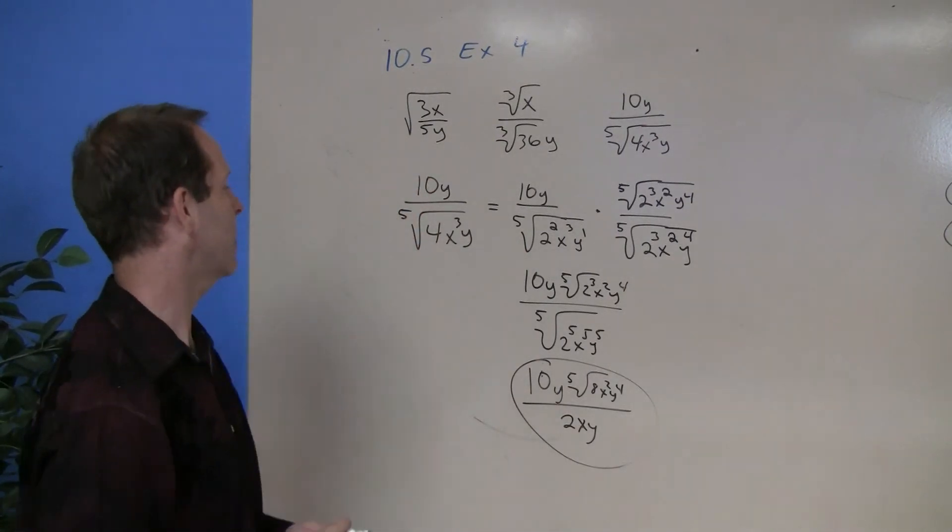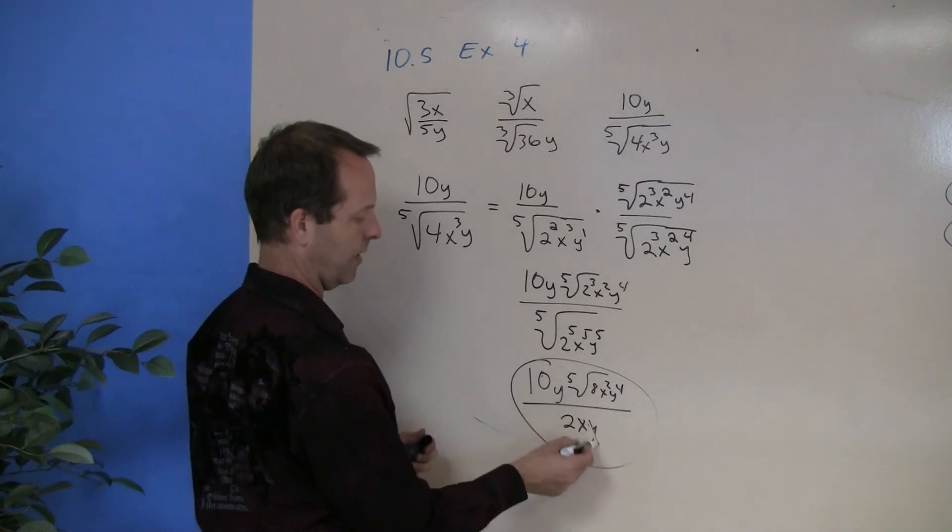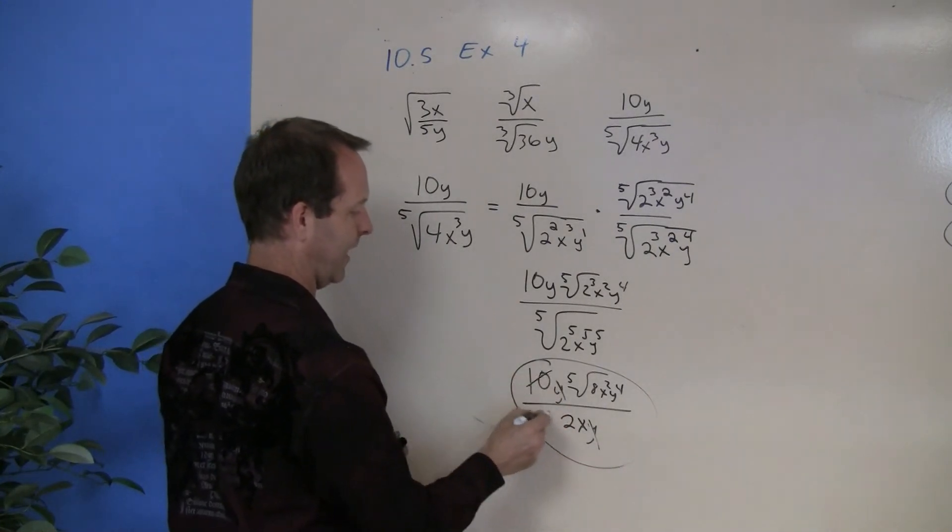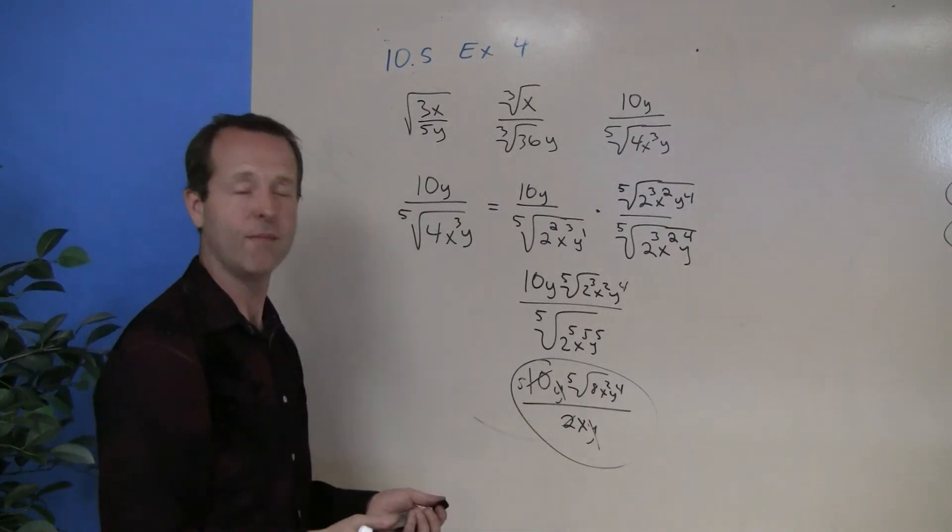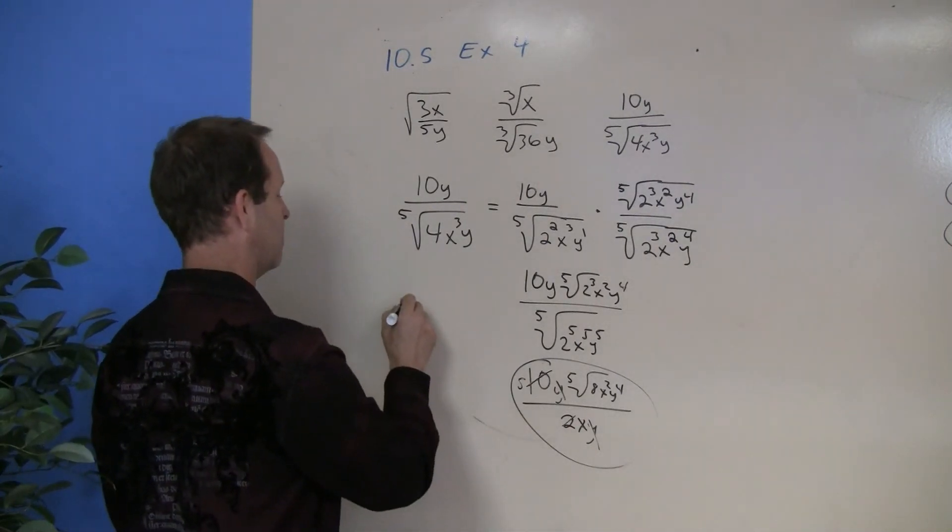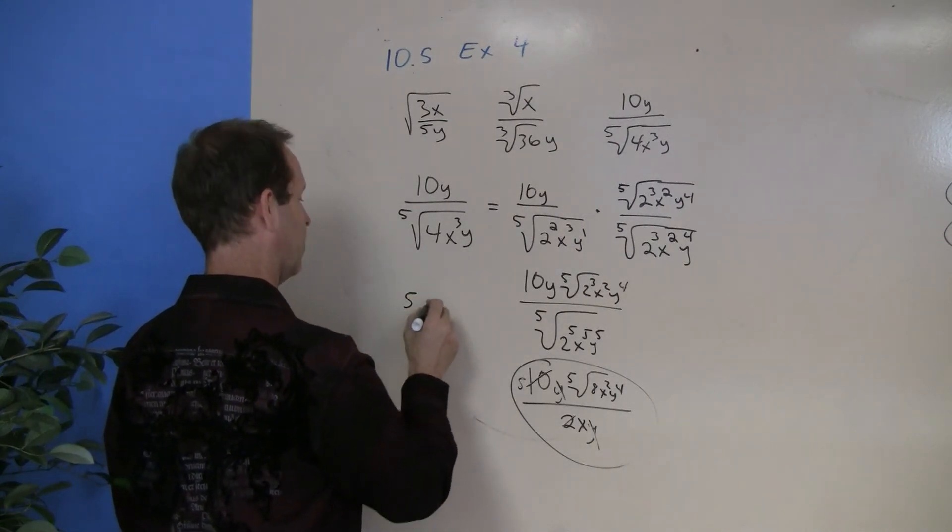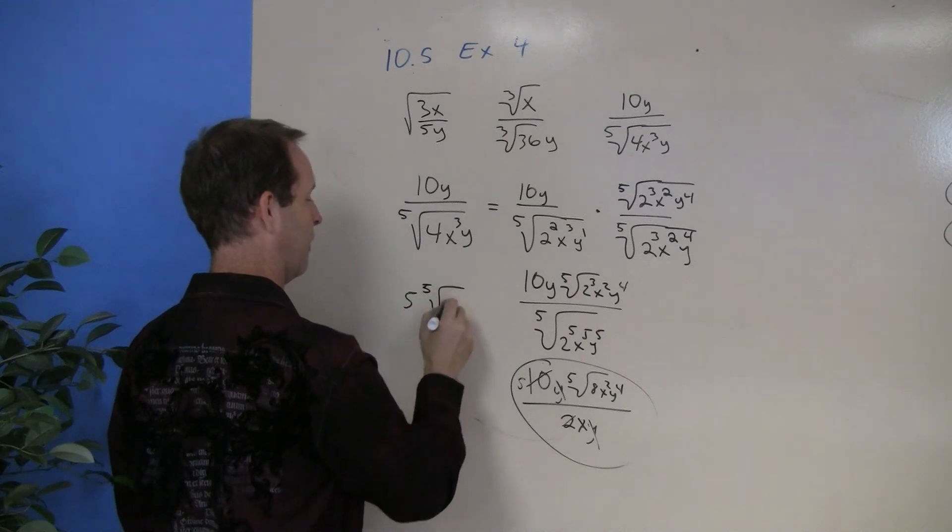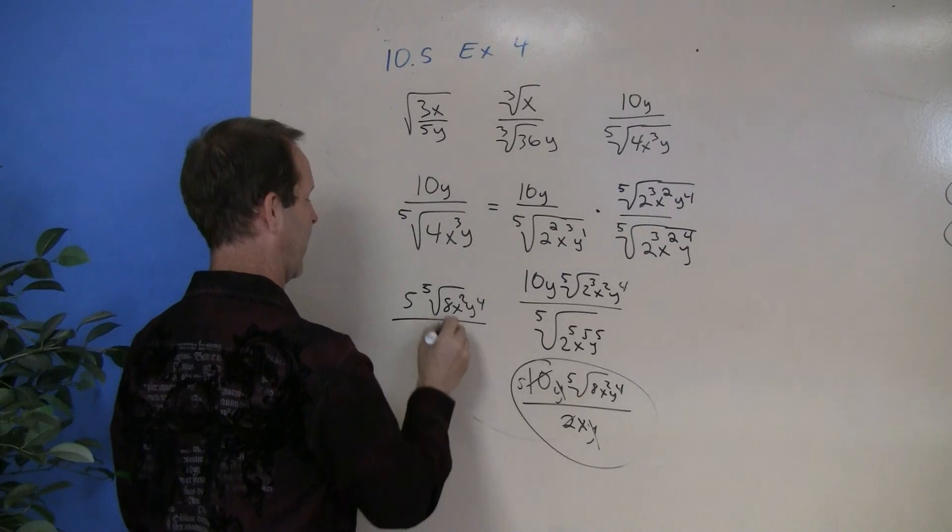So I was able to reduce that problem afterwards. So my final solution is going to be 5 to the fifth root of all this stuff—8x squared, y to the fourth—over an x.